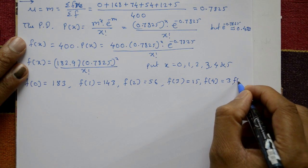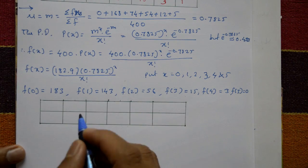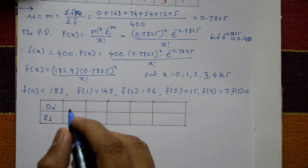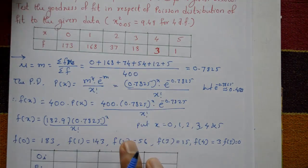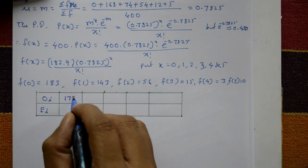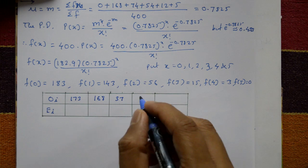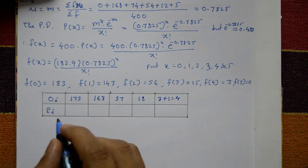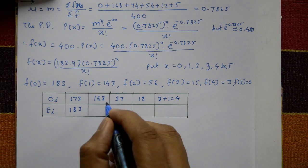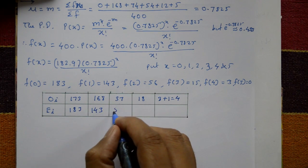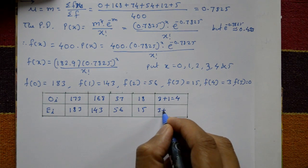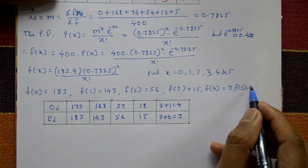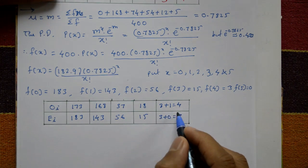Now construct a table with observed frequencies O and expected frequencies E. The observed frequencies are: 173, 168, 37, 18, and the last two values 3 plus 1 combined equal 4. The expected frequencies are: 183, 143, 56, 15, and the last two values 3 plus 0 combined equal 3. Since the last expected frequency is 0, it is clubbed with the previous class.